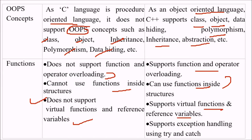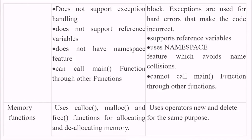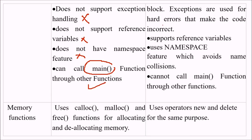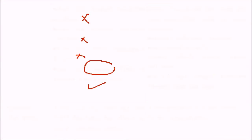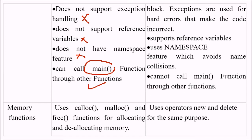C++ supports exception handling using try and catch constructs. C does not support exception handling. Exceptions are used for hard errors that make the code incorrect, and C++ handles these using the try-and-catch block construct.